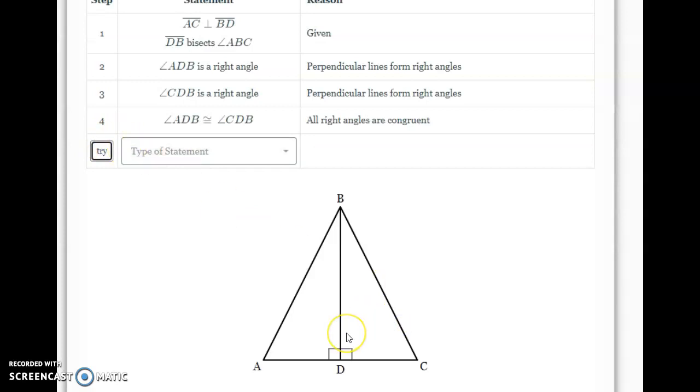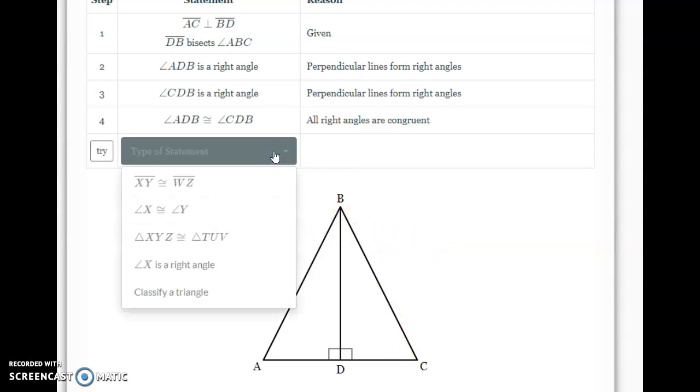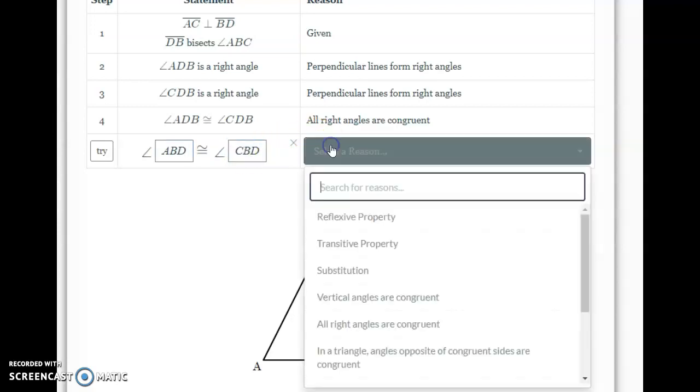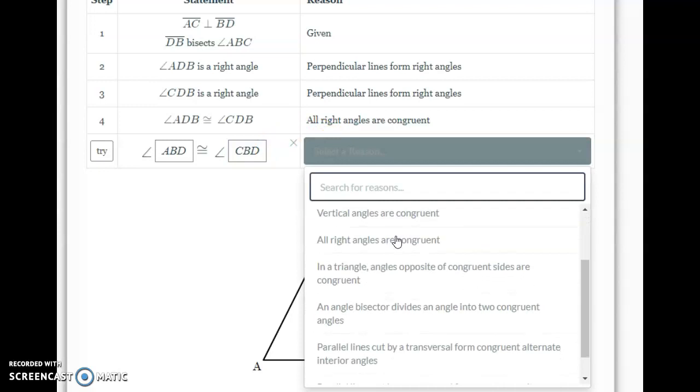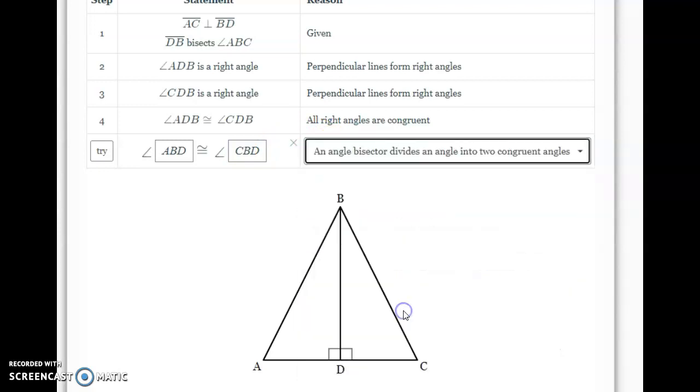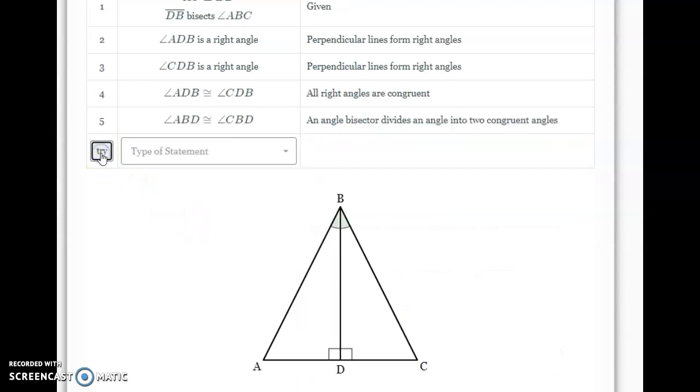That took care of my first given. Now, my second given is that DB bisects angle ABC. And we know that bisect means it splits it into two equal pieces. So, we can say that angle ABD is congruent to angle CBD because an angle bisector divides an angle into two congruent angles.